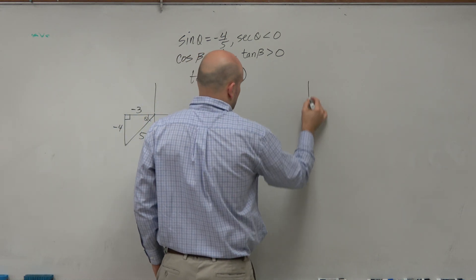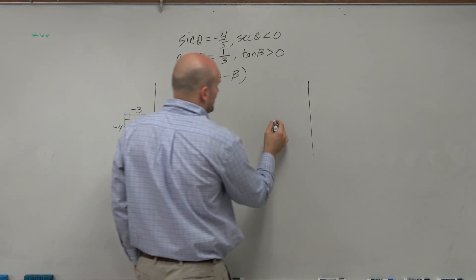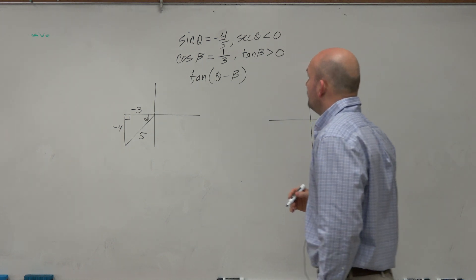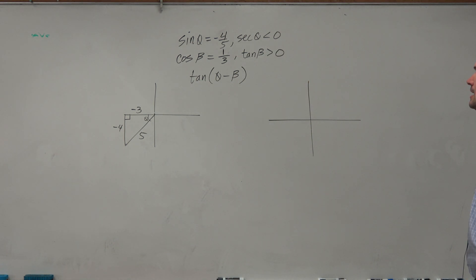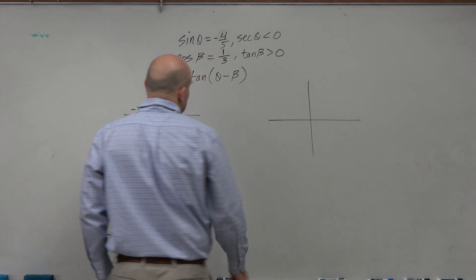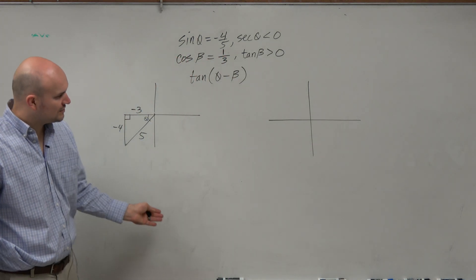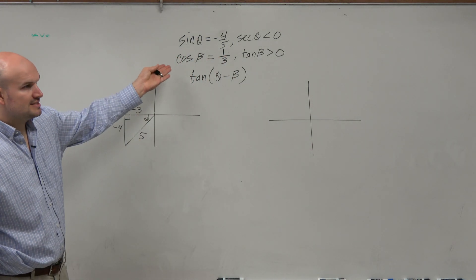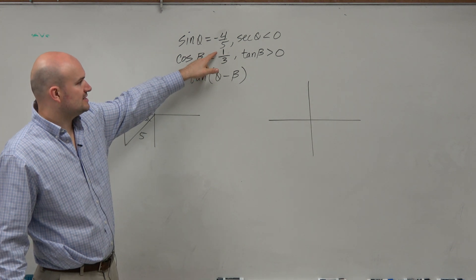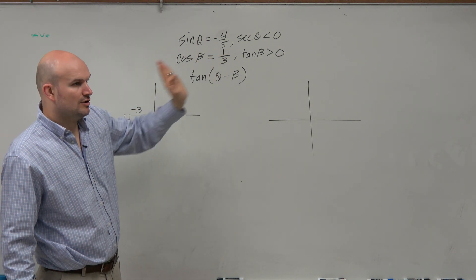Now let's go and do beta. That's theta. So beta is cosine of 1/3, where tangent is positive. Tangent is positive in the first and the fourth quadrants. Well, since cosine is also adjacent, that's positive, then I know it's going to be in the first quadrant.